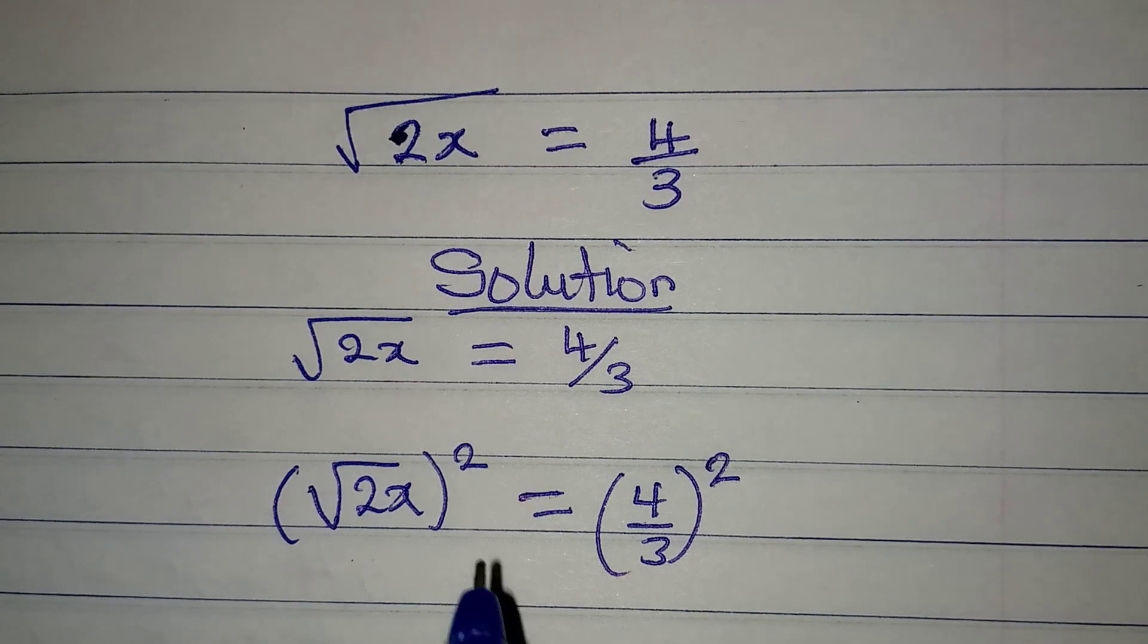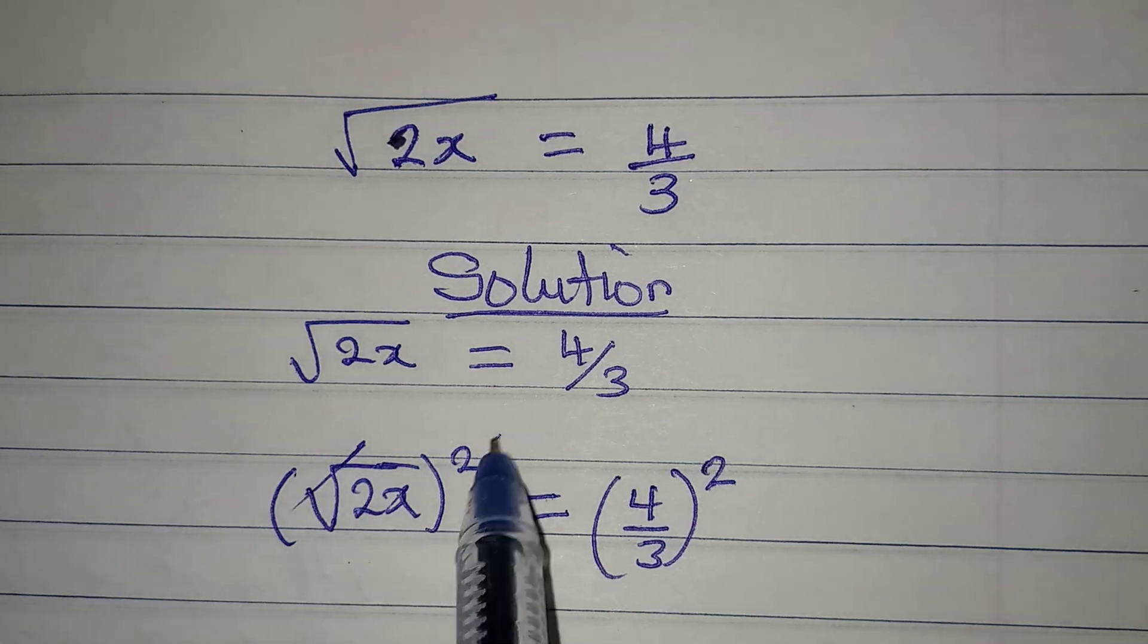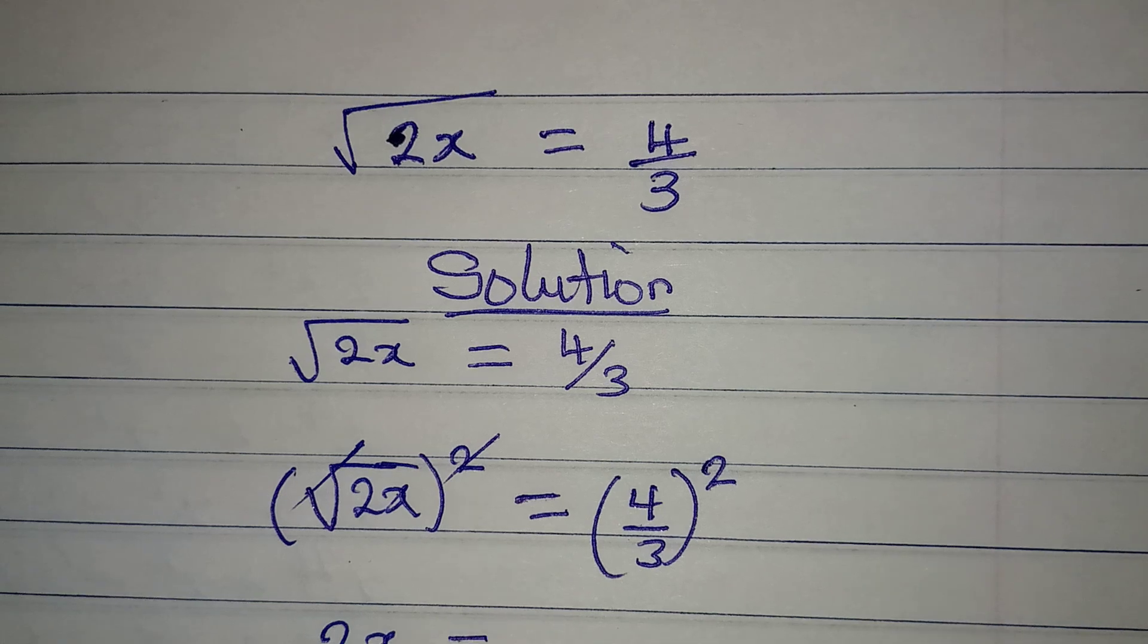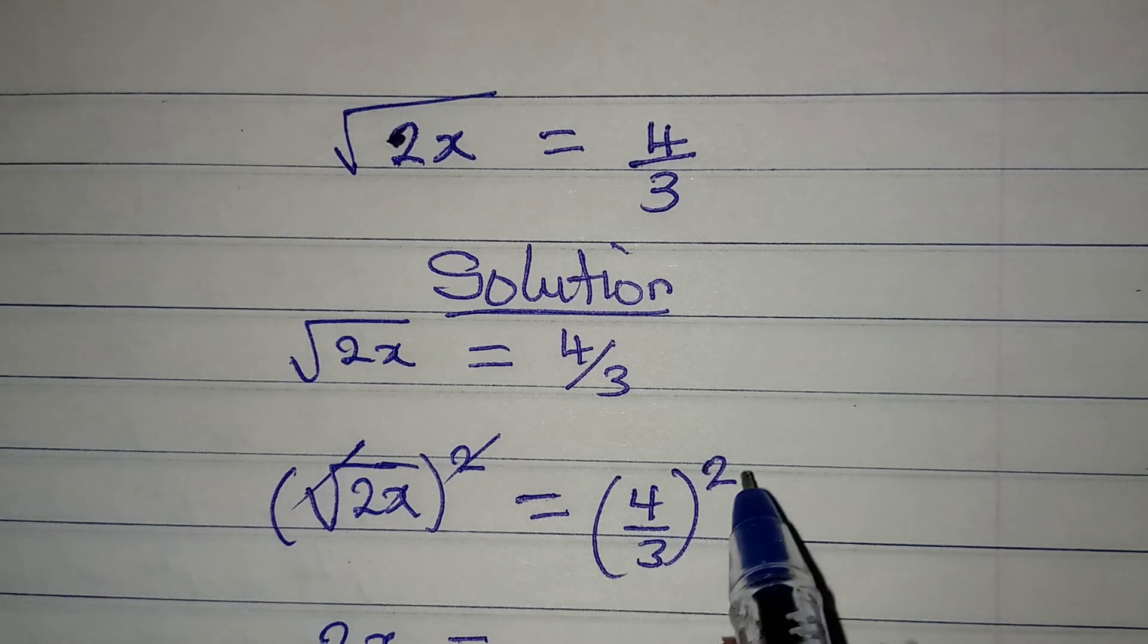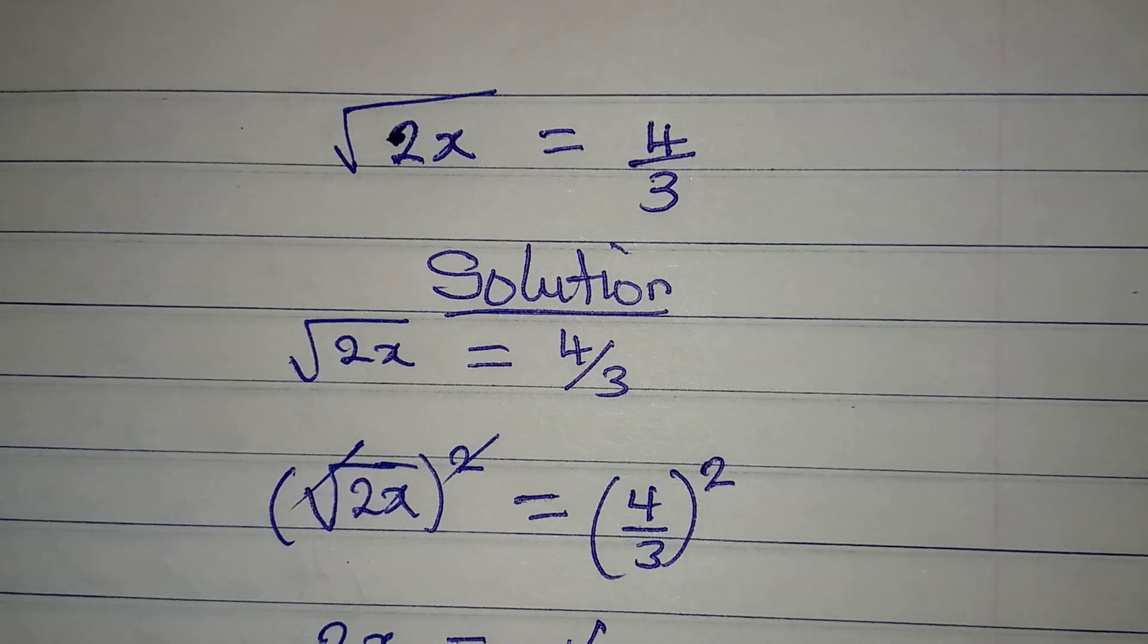Now remember that everything here is under the square sign. This will cancel, and then we have 2x which will be equal to 4 squared over 3 squared, and that will be 16 over 9.